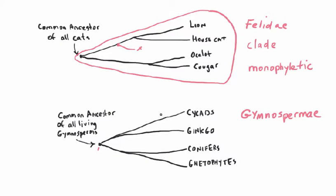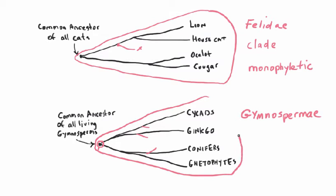We could draw a wedge-shaped diagram around it, and that would be our monophyletic taxon or clade of the Gymnospermi. This is true provided we take things back to their most recent common ancestor — the ancestor of all living gymnosperms — and no farther back.